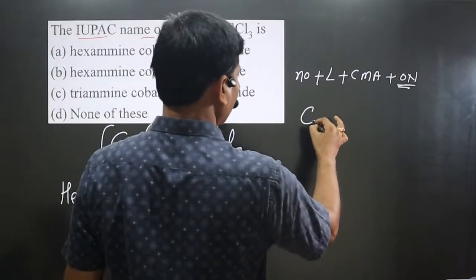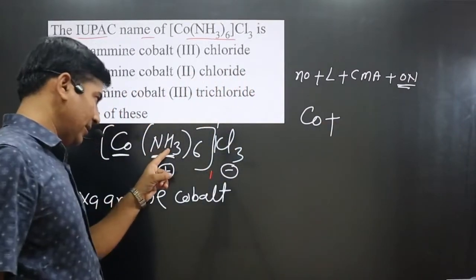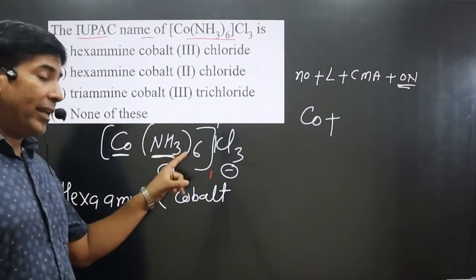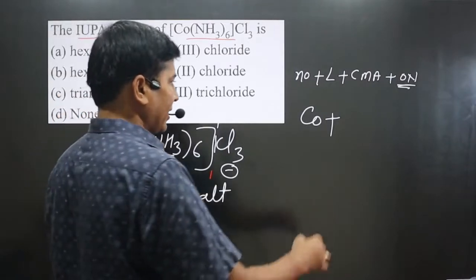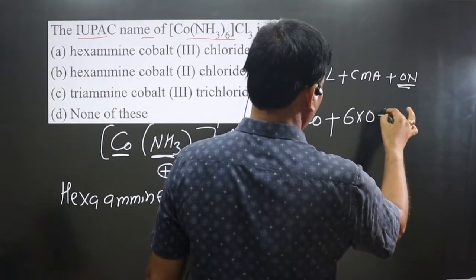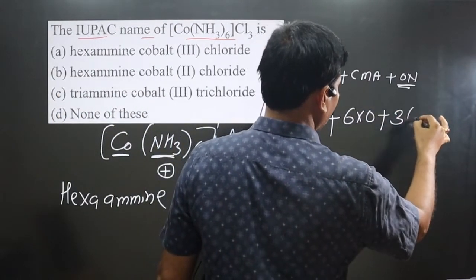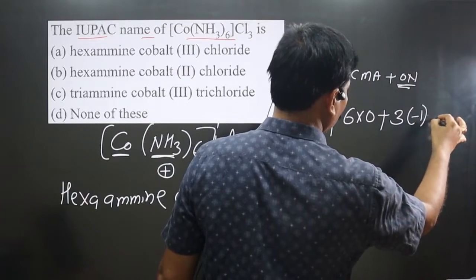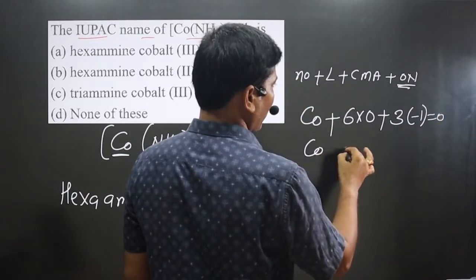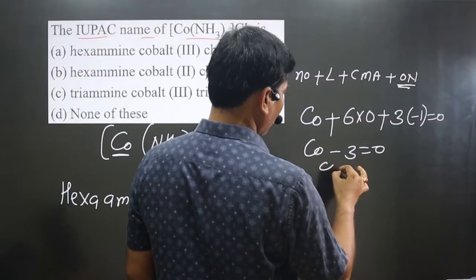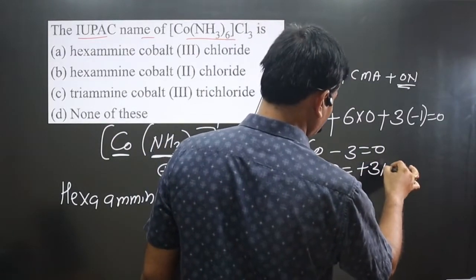Oxidation number we can calculate. It is a neutral complex, cobalt. This is a neutral ligand, it does not carry any charge. So 6 multiplied by 0, and then we have chloride 3. Each chloride is having minus 1 charge is equal to 0. Simplify. Cobalt minus 3 is equal to 0. Then cobalt is present in plus 3 oxidation number.